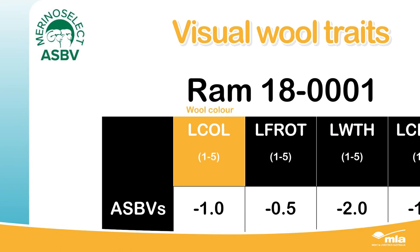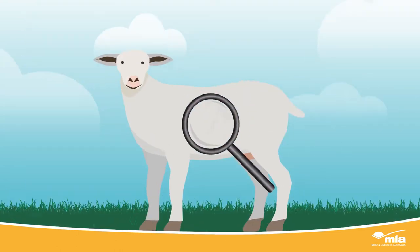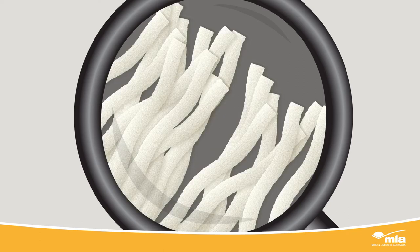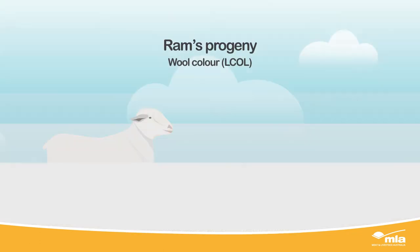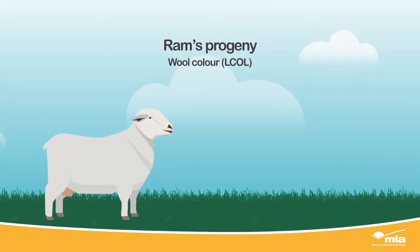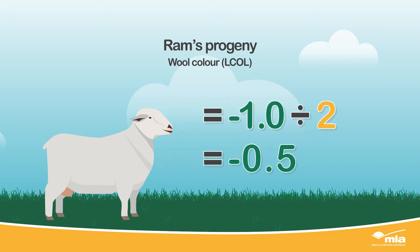LCOL is wool colour and describes the white and yellow intensity of greasy wool. A ram with a wool colour ASBV of negative 1.0 will on average produce progeny that have negative 0.5 scores for whiter greasy wool, compared to a ram with an ASBV of 0.